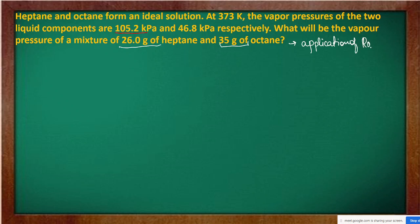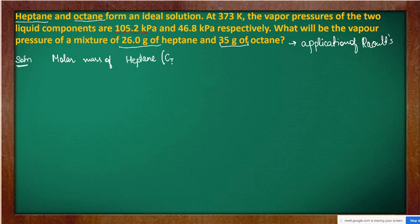Here we have to use Raoult's law. First, we need to identify the two components: heptane and octane. We have to calculate the molar mass of these two substances. The molecular formula of heptane is C7H16, since it is an alkane. Alkanes have the general formula CnH(2n+2).